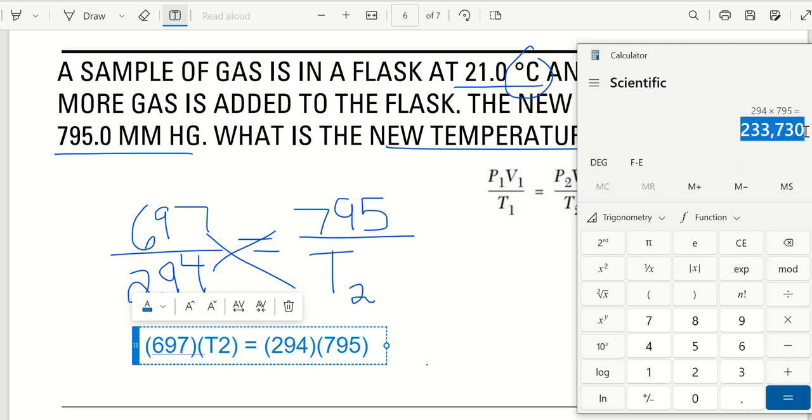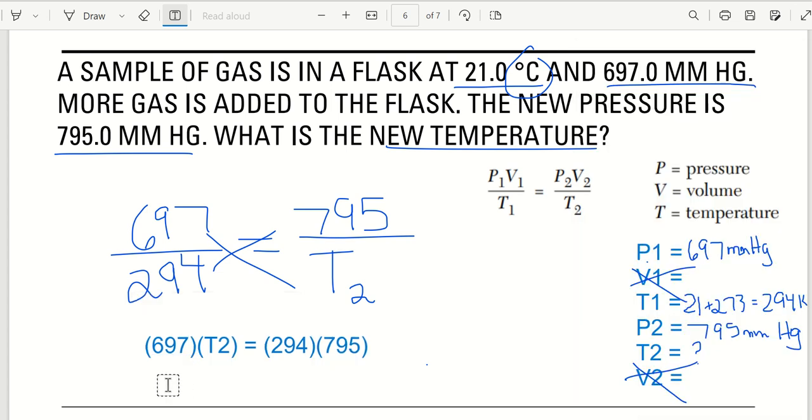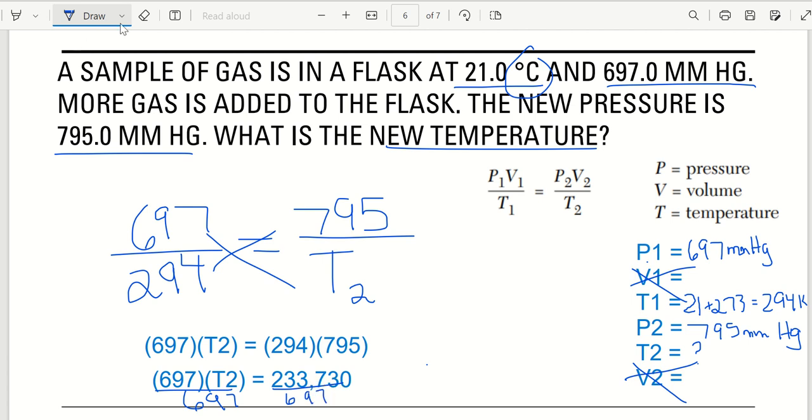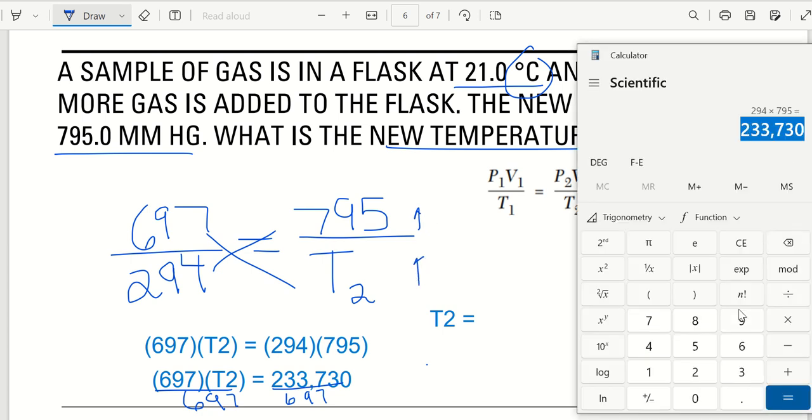We get 697 times T2 equals 294 times 795. So let's do 294 times 795. So let's just copy this. So what do we have? That same thing on this side, 697 T2 equals this. How do I solve for T2? What do I do? Divide both sides by 697. Divide by 697. So T2 is equal. Now what did I say it should do? Well, go back here for a second. Pressure went up. Temperature should go up. Let's see if we were right.